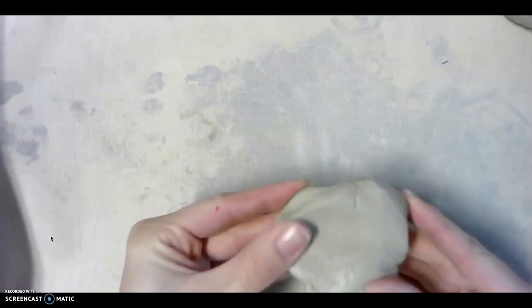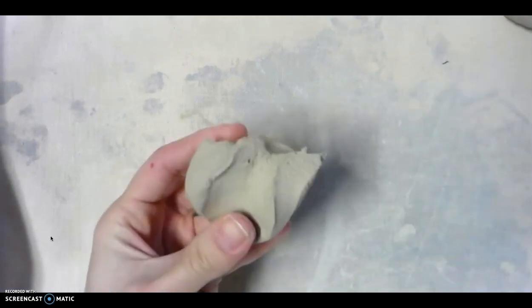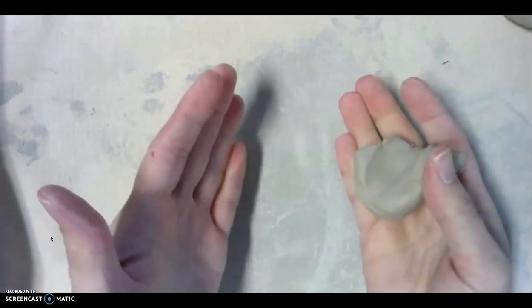First of all, I'm going to give you a demo on how to roll coils. Start with a piece of clay that is in the plastic stage, and we're not going to use a lot for what I'm demoing here, and it should be wedged so we don't have any air pockets.